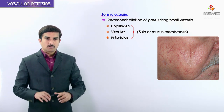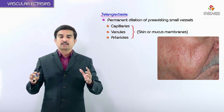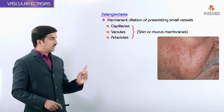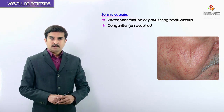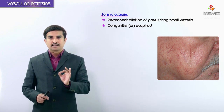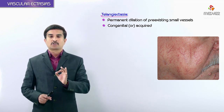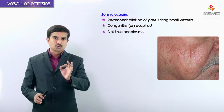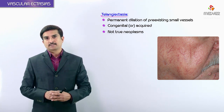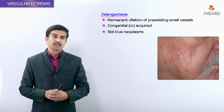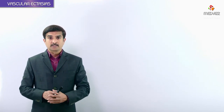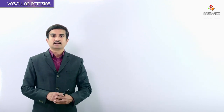Telangiectasias usually affect the skin as well as mucous membranes, forming discrete red lesions. These lesions can be congenital or acquired, and importantly, they are not true neoplasms. We have different types of vascular ectasias, which we will discuss each in detail.